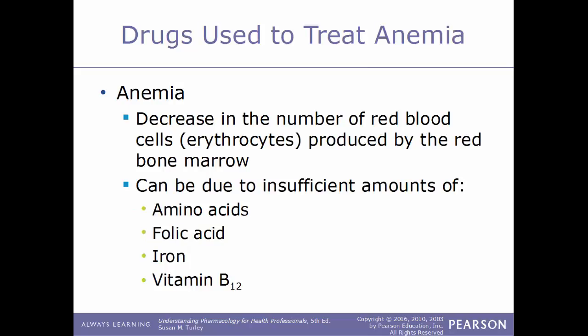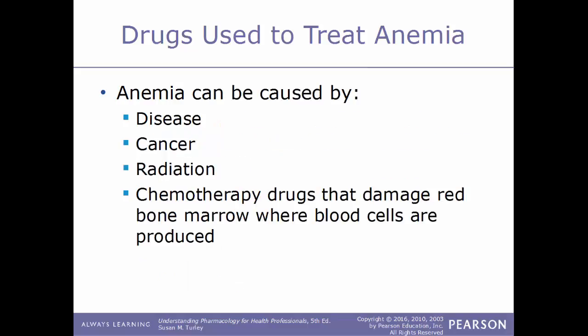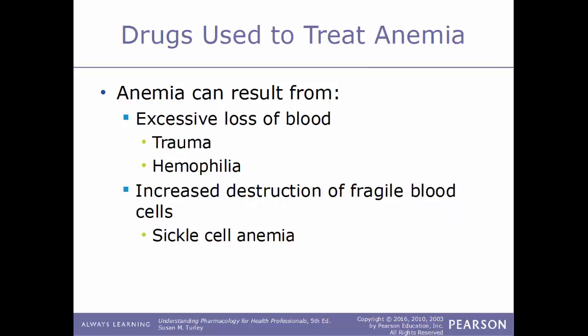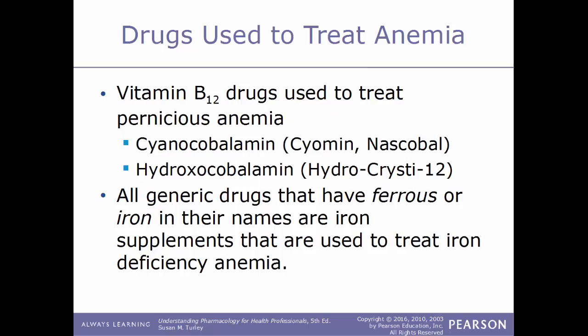Now we'll talk about drugs used to treat anemia. Anemia is a decrease in the number of red blood cells produced in the red bone marrow — another term for red blood cells is erythrocytes. This could be due to insufficient amounts of amino acids, folic acid, iron, or vitamin B12. Anemia can also be caused by disease, cancer, radiation, or chemotherapy drugs that damage the red bone marrow. Anemia may also result from excessive blood loss such as in trauma or hemophilia, or from increased destruction of fragile blood cells, as in sickle cell anemia.